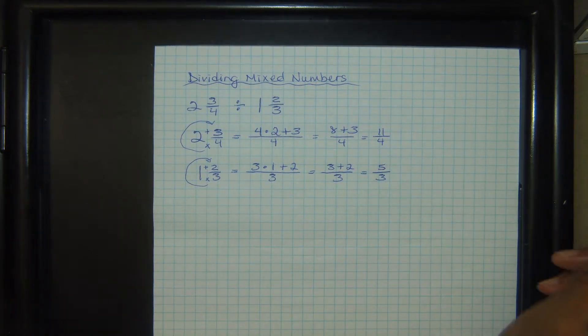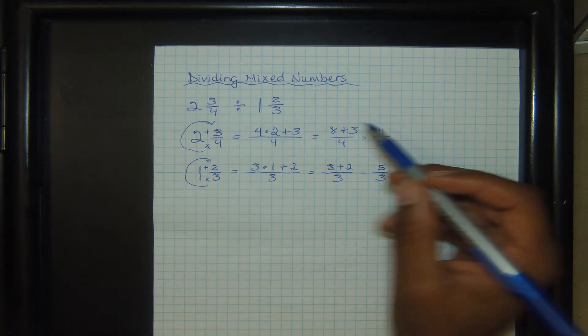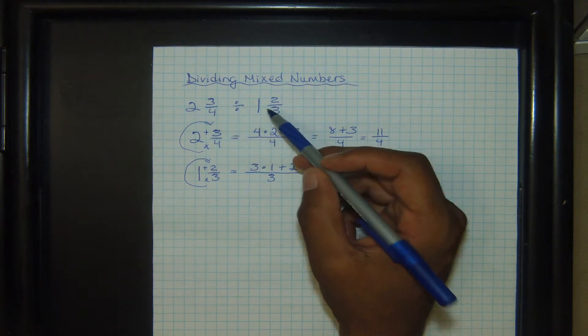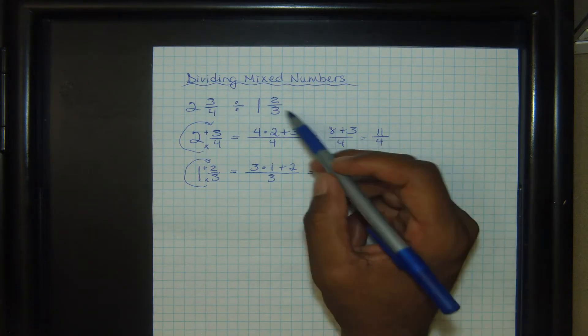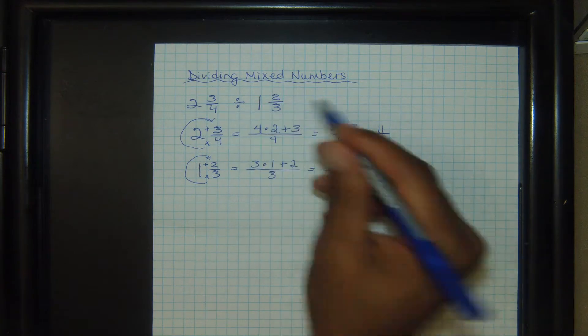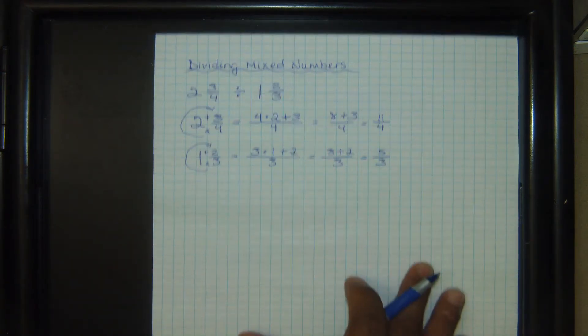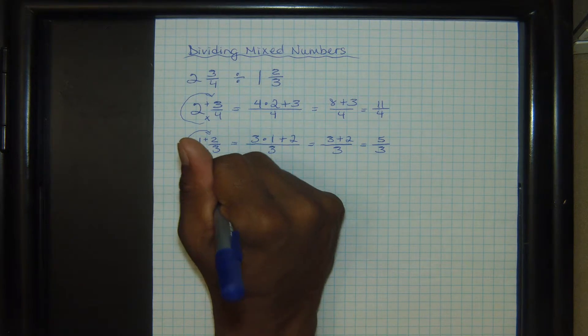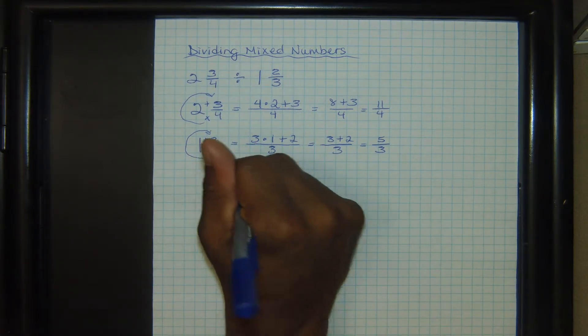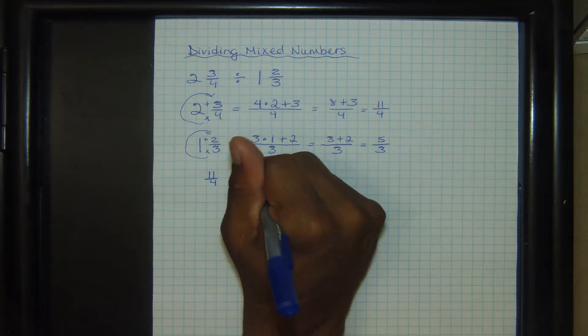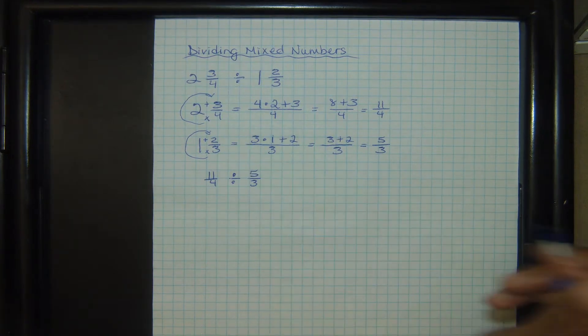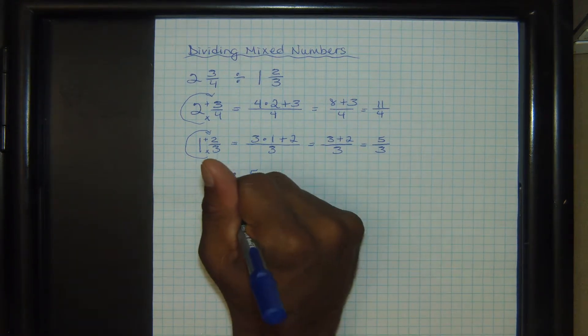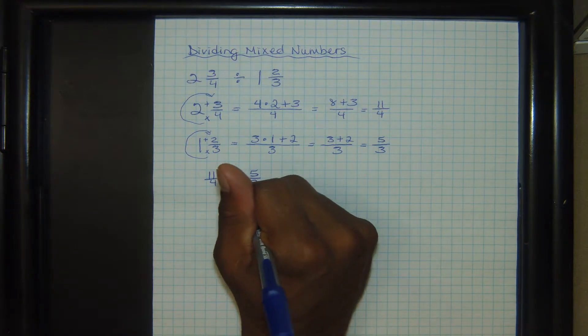So now that we've done that, I'm going to rewrite these two mixed numbers as these improper fractions with the division sign. I'm basically going to rewrite the problem. So that's going to be eleven over four divided by five over three. And now that I've done that, I can go ahead and change division to multiplication and take the reciprocal of the second fraction.